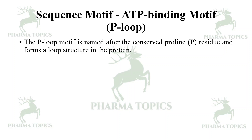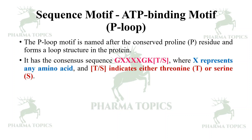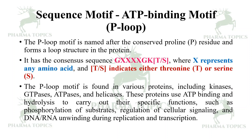The P-loop motif is named after the conserved proline residue and forms a loop structure in the protein. It has the consensus sequence GXXGXGKS/T, where X represents any amino acid — after G, any amino acid can come, followed by threonine or serine.